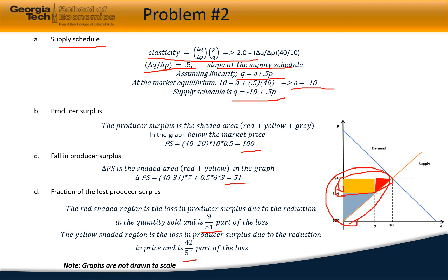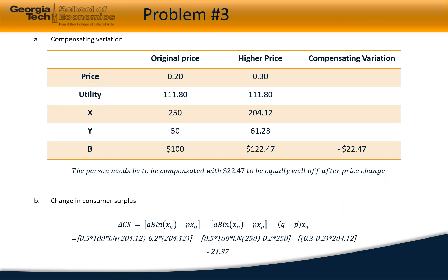In the next problem, we need to compute the compensating variation to achieve the same level of utility after a price increase. Since there has been a price increase from $0.20 to $0.30, we would need to increase the budget by $22.47 to be able to achieve the same level of utility, 111.80. So the person needs to be compensated with $22.47 to be equally well off after a price increase.